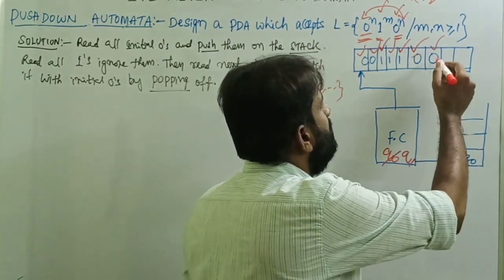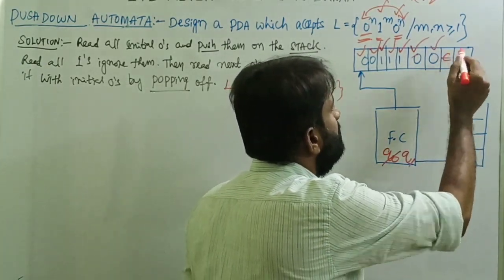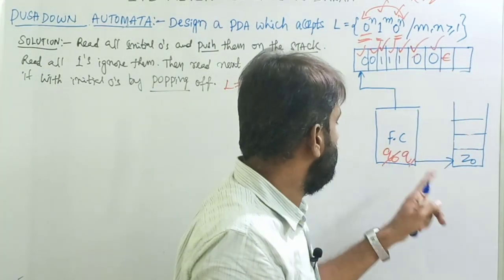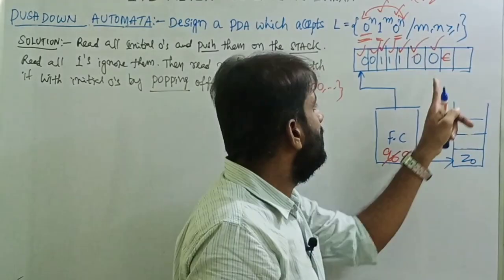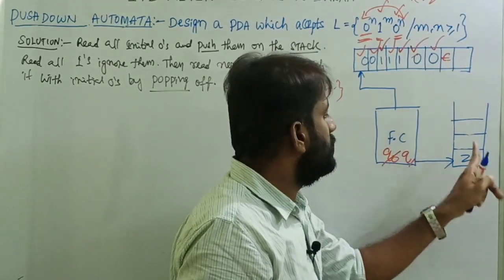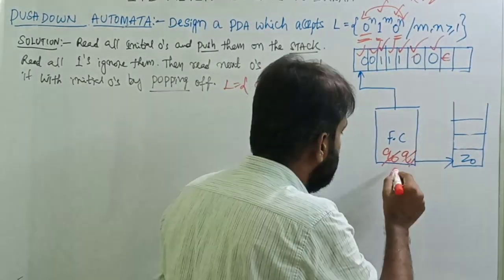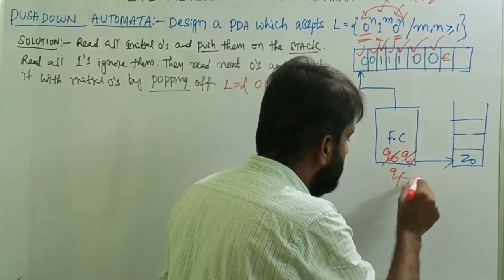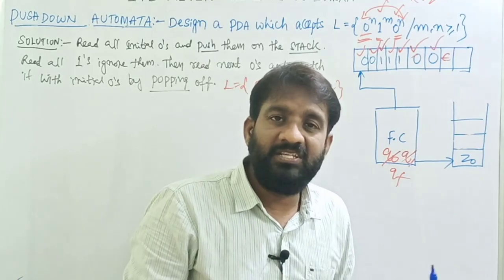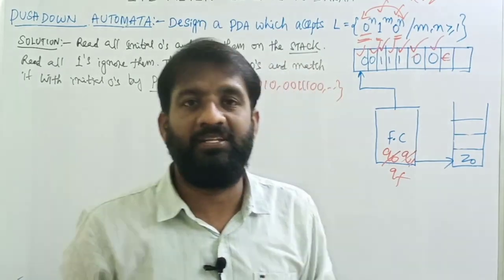When there is no more input symbol, the input symbol is epsilon. At state q1 with epsilon input and top of the stack is Z-naught, move to the final state. The language is accepted by final state.